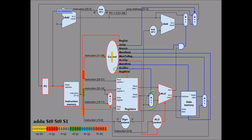The next part of the instruction, bits 25 through 21, indicate which register's data will be read and used as the first argument passed to the ALU. For this walkthrough, we will say there is a 5 stored in this register. Bits 20 through 16 indicate which register's data will be read and used as the second argument to the ALU — we will say there is a 3 stored in this register. For bits 15 through 11, since the control unit sent a high signal to this MUX, it will indicate which register will have the results of the operation written to. Bits 5 through 0 are passed to the ALU control unit to signal that an addition operation is needed — this is the function part of the instruction.